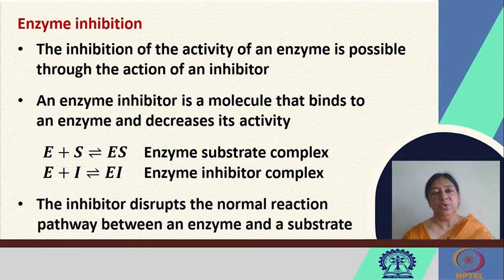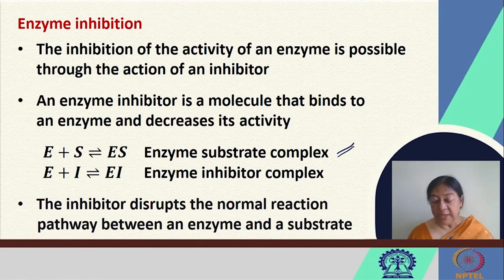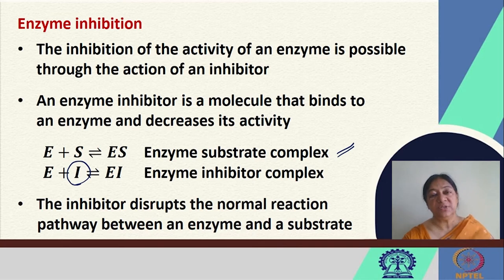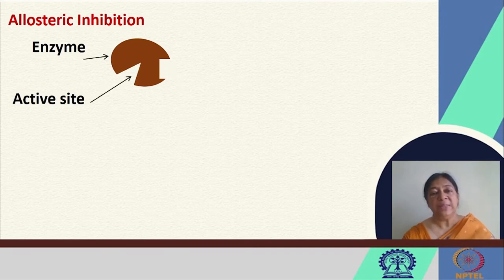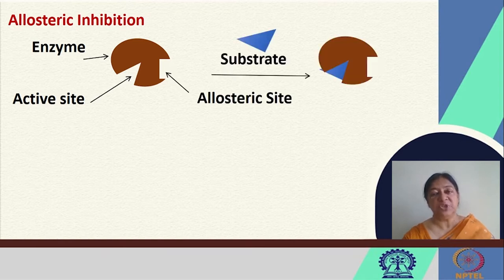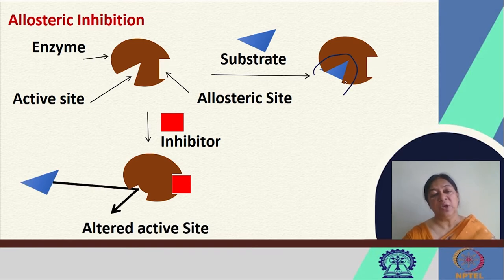What we saw in the last lecture was that enzyme inhibition was a process that inhibited the activity of the enzyme by several methods. The enzyme-substrate complex would be interrupted by the presence of an inhibitor that would form an enzyme-inhibitor complex, disrupting the normal reaction pathway and not leading to the desired product. We also looked at allosteric inhibition, where an inhibitor binding to the allosteric site modifies the active site such that the substrate is unable to bind because of the altered active site.